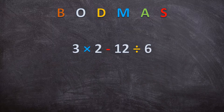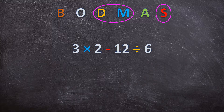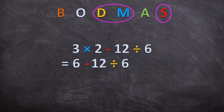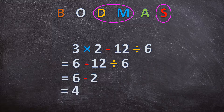Now let's look at this example. We have multiplication, division, and subtraction. We divide and multiply first before we subtract. And in which order do we divide and multiply? We start at the left and go right. So multiply is first: 3 times 2 is 6. We don't subtract yet. Now we divide: 12 divided by 6 is 2. Now that we've multiplied and divided, we may subtract: 6 minus 2 is 4.